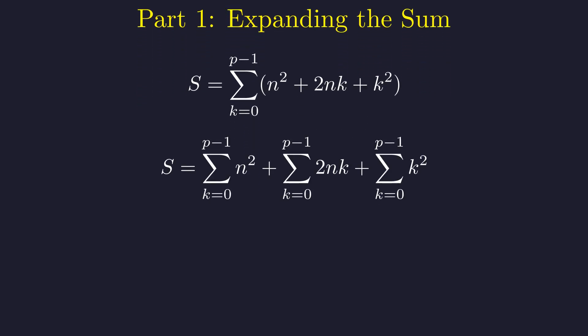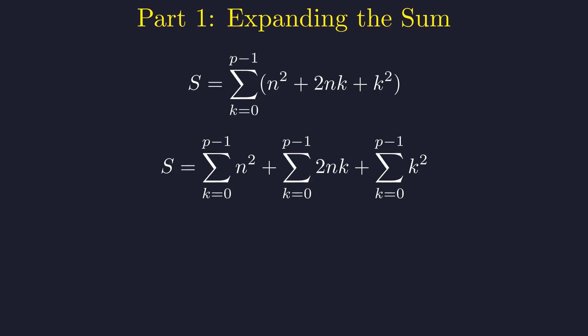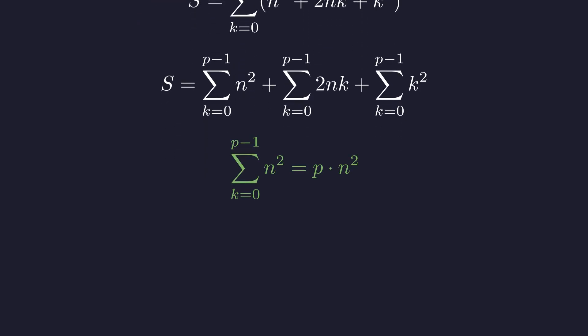Each term becomes a sum of three parts. By the linearity of summation, we can distribute the sigma and handle each term separately. For the first sum, we're adding the constant n squared p times, which simply gives us p times n squared.